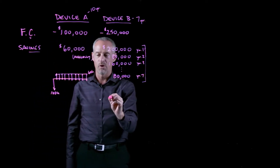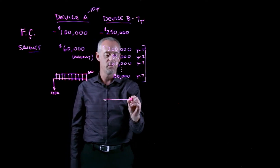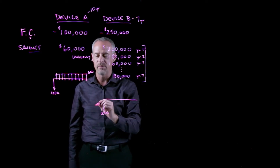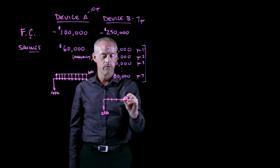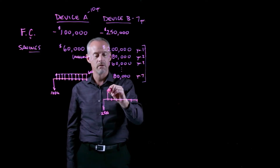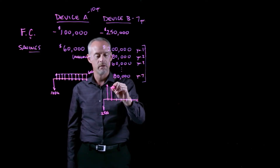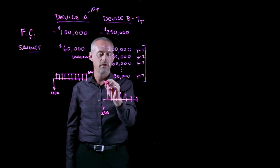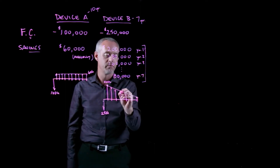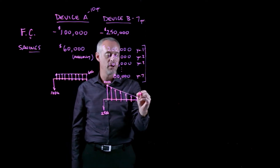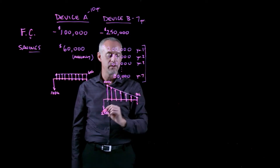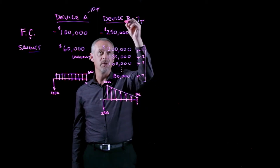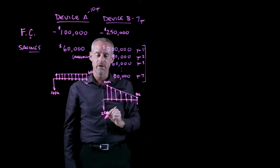For device B, it's a little more complicated. We have a $250,000 cost at time t equals zero, a seven-year planning horizon, and savings that start at $200,000 and decrease every year by $20,000 down to $80,000 at the end of year seven. This cash flow diagram represents the investment in device B, and the previous one represents the investment in device A.